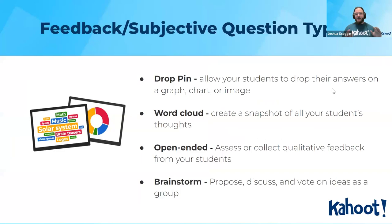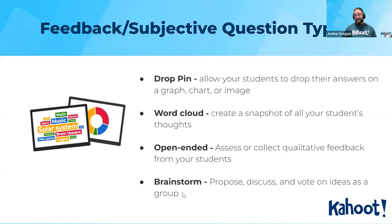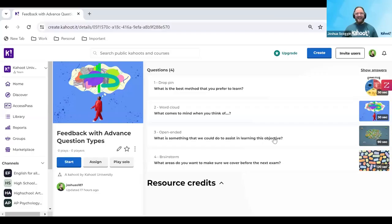The question types we're focusing on today: scale and polling are on the way, but we'll be doing more of a drop pin — I'll talk a little more about that, allowing your students to drop little answers on graphs, charts, images. And then there's word cloud — you've probably seen it before — it creates a snapshot or a collage of everyone's thoughts, ideas, and concepts. Open-ended, I get asked a lot about — assessing and collecting qualitative feedback from your students in more of a longer stanza answering type. And then one of my favorites is brainstorm — super fun. You get to propose, discuss, and even vote on different ideas. I'm going to stop sharing so that I can pull up the Kahoot for us to look at. Unfortunately we will not be playing this Kahoot today, but we'll be taking a deeper look at it. I'll show you on the editor side on my Kahoot platform here.